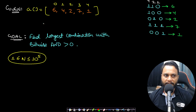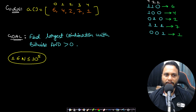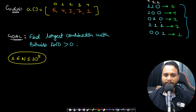Let's look at an example. Given [6, 4, 2, 7, 1], our goal is to find the largest combination with bitwise AND greater than zero. If you look at the binary representation of all these numbers, you will notice that for a combination to have bitwise AND greater than zero, there should be at least one common bit position where all the bits are set.